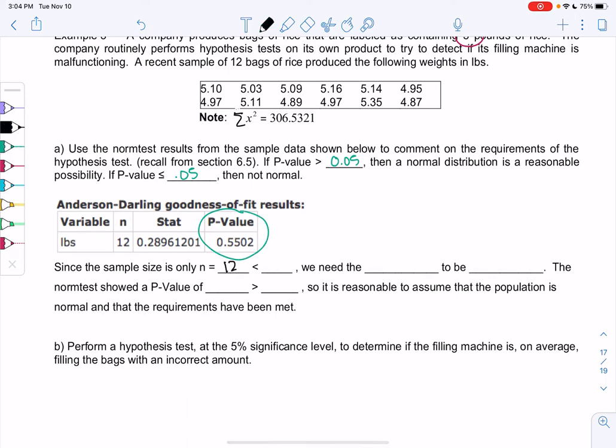I put this data into StatCrunch and got a p-value of 0.5502. Since my sample size is only 12, less than 15, we need the population to be normal. The norm test gave a p-value of 0.5502, which is more than 0.5, so it's reasonable to assume that the population is normal and the requirements have been met.